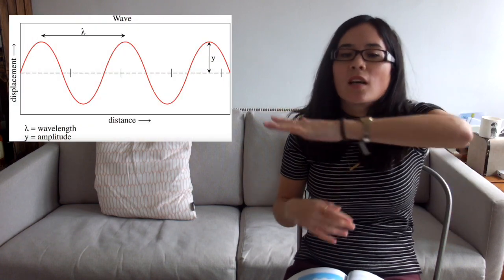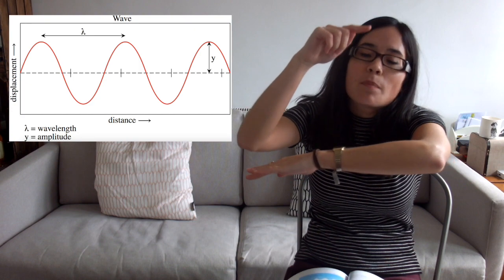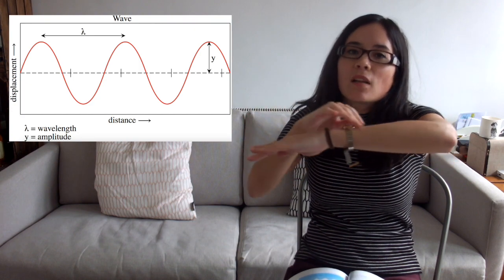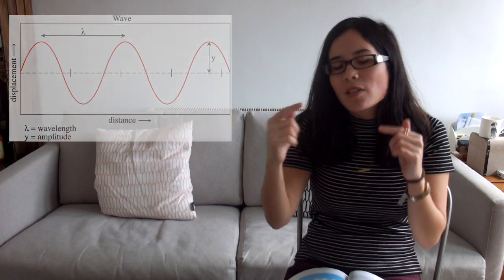So we'll start with the basics of waves then, so the diagram. First of all, what is the amplitude of a wave? Remember that's the distance from where there's no disturbance — so the centre line — to the highest point, so the peak, or from that middle line to the trough. So it's the maximum disturbance seen by a wave.